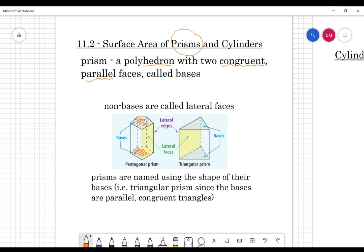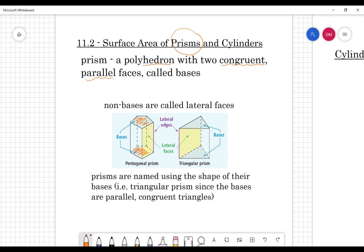Those pentagons are both congruent and parallel. So any non-base that we have is going to be called a lateral face. Lateral literally means side. So any of these sides that would make up the remainder of my three-dimensional figure, the distance from base to base here is going to be a lateral face and they are connected by lateral edges. So you can see all these different words in here. I just thought that that would be good for you to make sure that you knew those different terms.